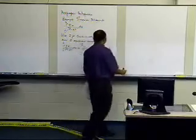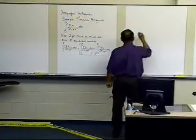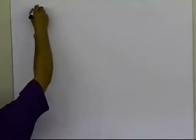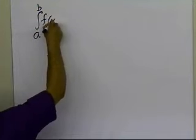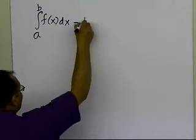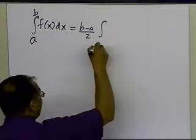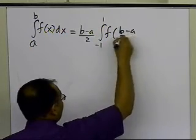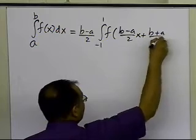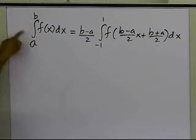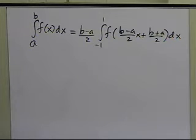I'm going to skip some steps because we have been showing these steps for many cases in the Gaussian quadrature rule, and also in the previous example for this one. The first thing we have to do is convert the integral going from a to b to an integral going from minus 1 to plus 1, to be able to apply the two-point Gaussian quadrature rule formula.